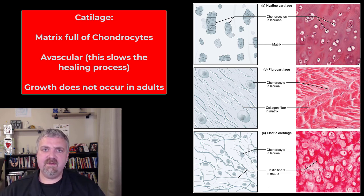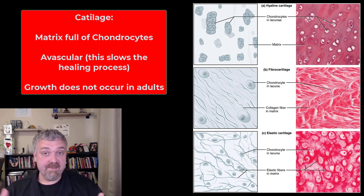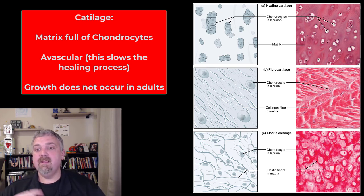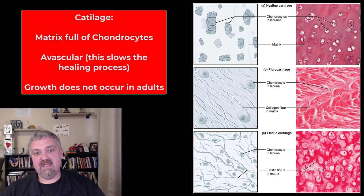The two key things I think of whenever I think of cartilage: number one, it's avascular — no blood supply. The only way that cartilage cells get nutrients is through diffusion. This is why they heal so slowly, because they don't have a blood supply like other tissues do. Bone heals much better and much more quickly. The other key thing is cartilage growth generally does not occur in adults. When you're a child, growth hormone produces more cartilage, but as we get older, we don't see that.